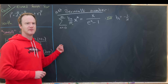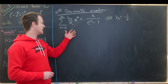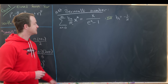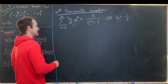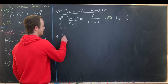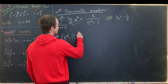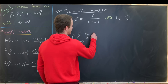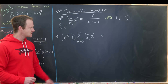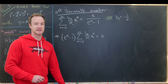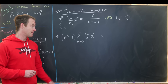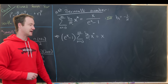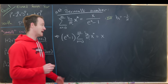Now let's see if we can get a nicer formula to calculate other Bernoulli numbers — maybe something that looks like a recursion. We can do that by multiplying both sides by e^x minus 1. So we have (e^x - 1) times the sum as n goes from 0 to infinity of b_n over n factorial times x to the n, which equals x.